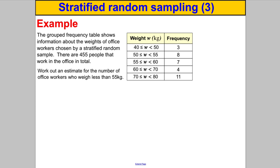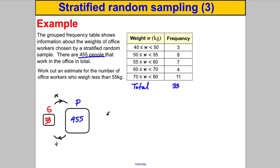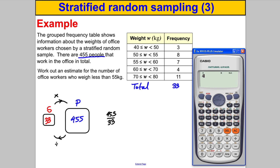Next question — pause and have a go. A frequency table shows the weights of office workers chosen in a stratified random sample. There are 455 people in the office — that's our population. We're asked to estimate the number of office workers who weigh less than 55 kg, covering two categories. First, add up the sample: 3, 8, 7, 14, and 11, giving a total of 33. Drawing our picture: sample = 33, population = 455. We calculate 455 divided by 33 to find how many times bigger the population is.